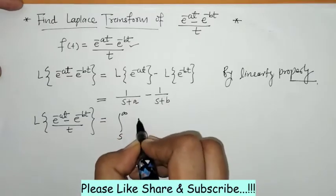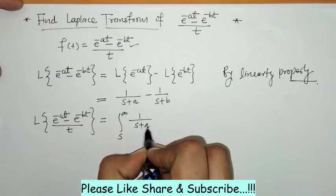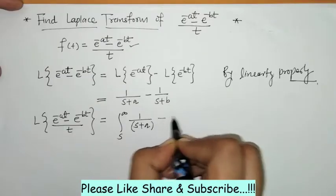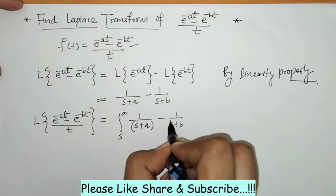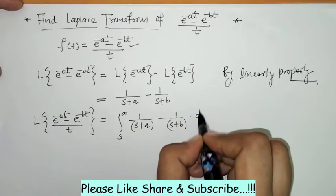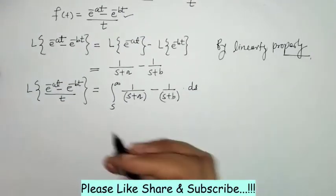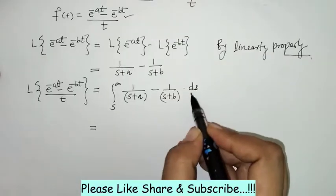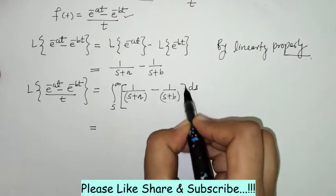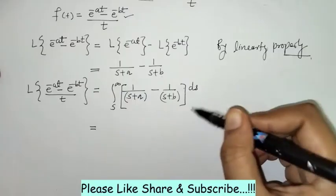The effect of division by t means we have to take the integral of this Laplace, with the integral within limits s to infinity. So here we have the integral of 1/(s+a) - 1/(s+b) with respect to s.